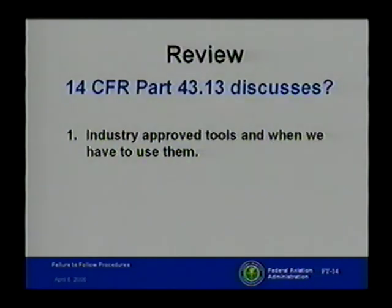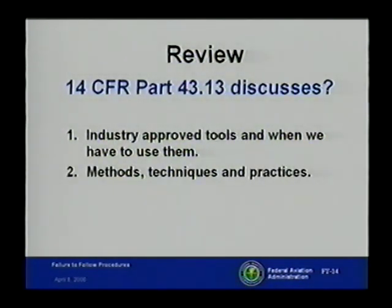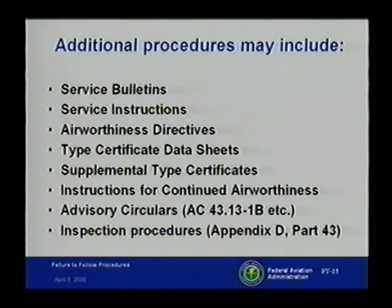For approving a turbine engine aircraft for return to service after an annual or 100-hour inspection, each person shall run the engines to check satisfactory performance in accordance with manufacturer's recommendations. The only way to accurately determine whether the engine meets this standard is through these manuals, because various charts and graphs are needed to account for the day's conditions, temperature, etc. Additional procedures may include service bulletins, service instructions, airworthiness directives, the type certificate data sheet, and supplemental type certificates — where the aircraft has been altered but not enough to require a new type certificate.